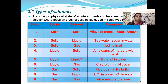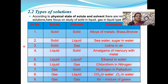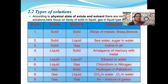According to the physical state of solute and solvent, there are nine types of solutions. The physical state may be solid, liquid, or gas, and we focus on liquid solutions — mainly solid in liquid, gas in liquid, and liquid in liquid types. First, if both solute and solvent are solids, it is called a solid-in-solid type of solution. Example: alloys of metals like brass and bronze.